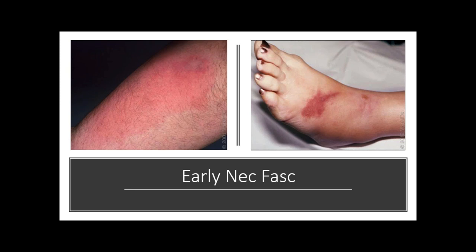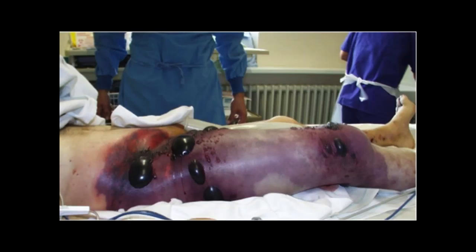Other salient features are going to be pain out of proportion, which is sometimes hard to conceptualize. This might not look that bad, but the patient might be in writhing pain — getting morphine and still rolling around asking for more pain meds. The other thing described in the textbooks is skin sclerosis. The skin will feel woody, and it will often extend beyond the visible margins.